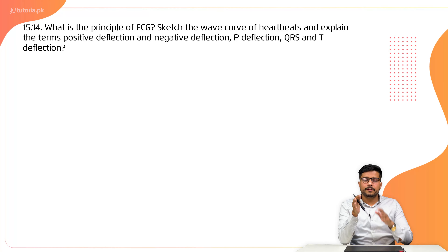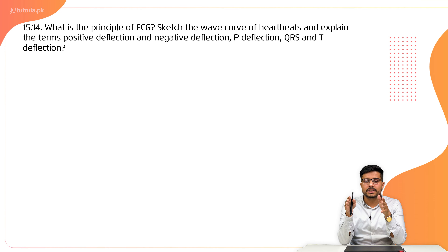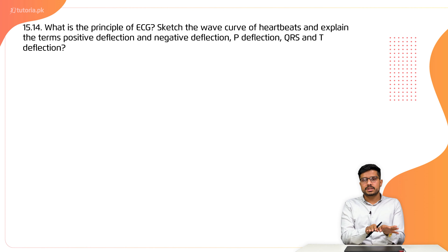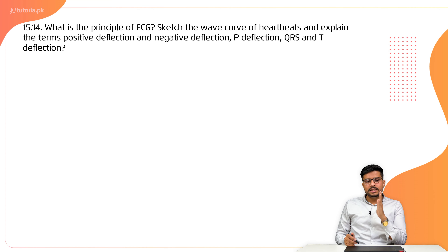I start my next question, which is question number 14: What is the principle of ECG? Sketch the wave curve of a heartbeat and explain the terms positive deflection, negative deflection, P deflection, QRS, and T deflection. Question number 14 and exercise question number 16 are actually the same question. Question number 14 covers ECG and negative deflection.